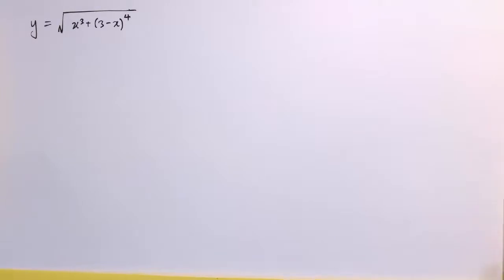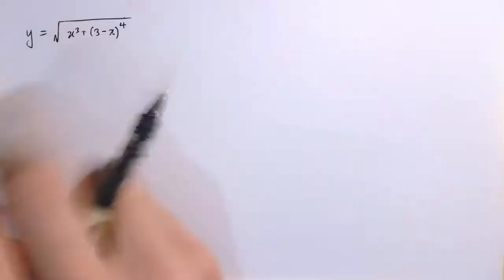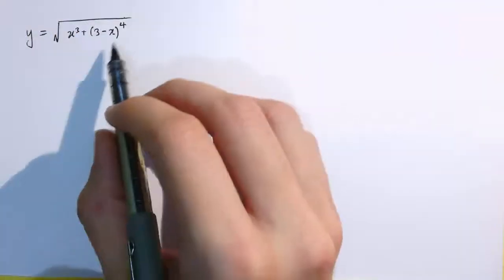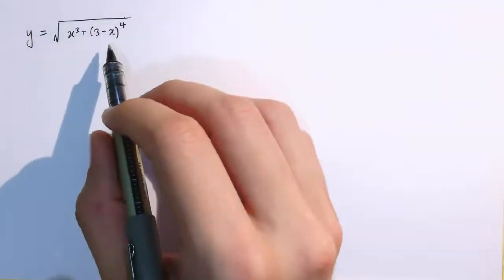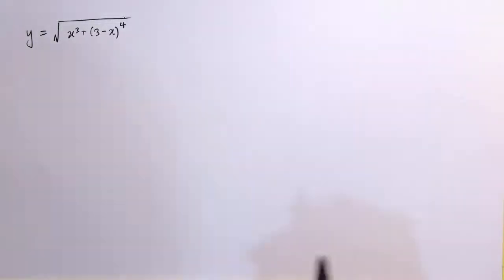I'm going to look at a couple of slightly trickier examples using the chain rule. The first thing I'm going to try and differentiate is this function: y equals x cubed plus 3 minus x to the power of 4, all square rooted. Let's see what happens when we try to apply the chain rule here.